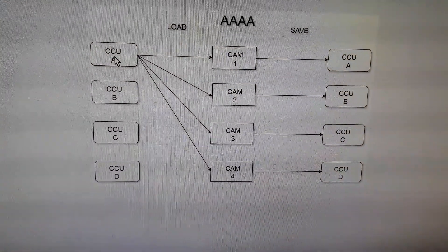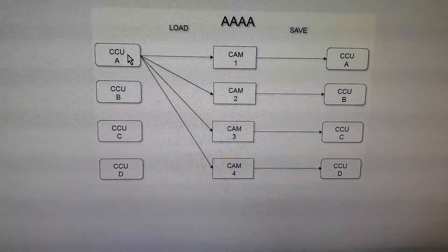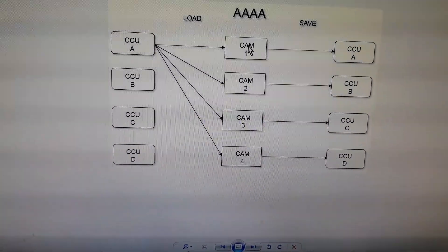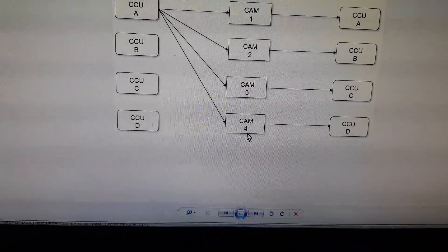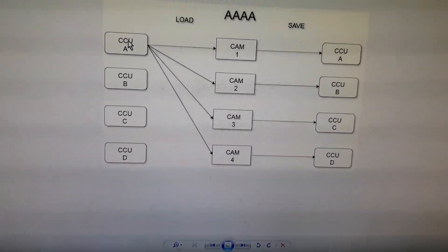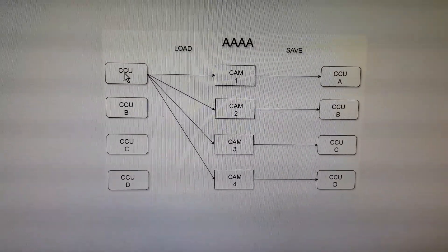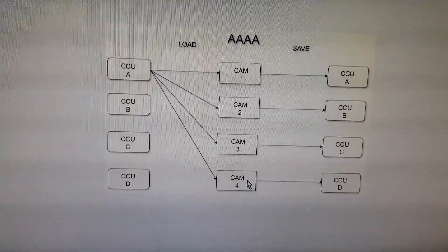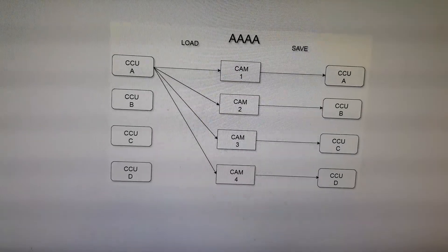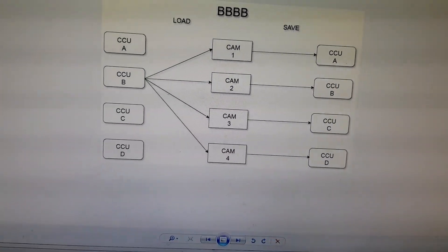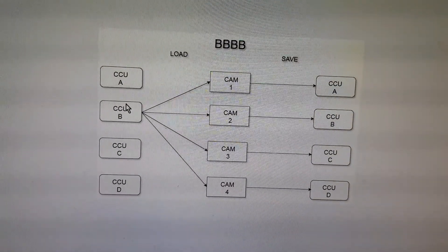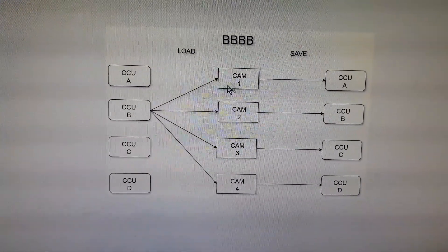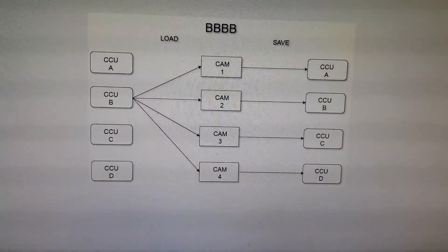Then we have the variations. When you have A, A, A, A selected, CCU position A is going to go to CCU positions A, B, C, and D — so that one saved CCU position A is going to go to all four CCU positions. Another example is CCU B: whatever was saved in CCU B, when loaded, can go to all four cameras as well.